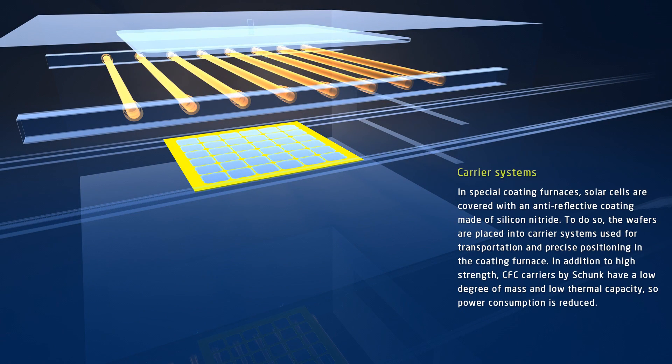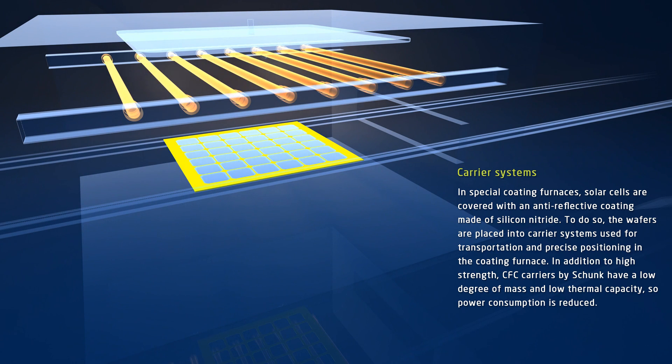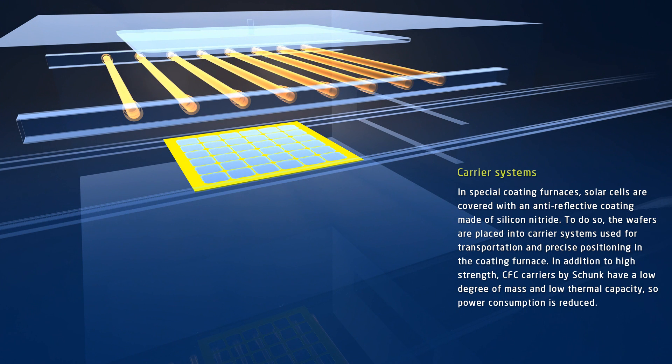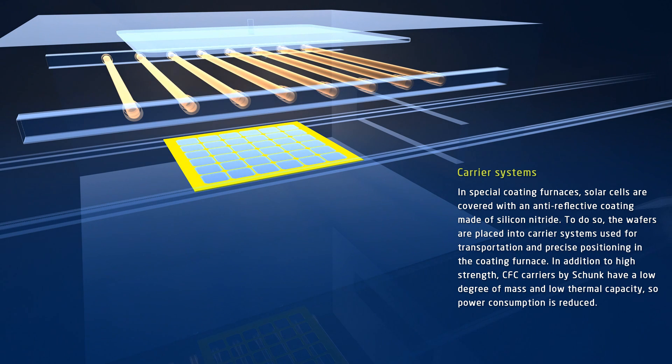In a special coating furnace, solar cells are provided with an anti-reflective coating made of silicon nitride. To do so, the wafers are placed into carrier systems used for transportation and precise positioning in the coating furnace. In addition to high strength, CFC carriers by Schunk have a low degree of mass and low thermal capacity, so power consumption is reduced.